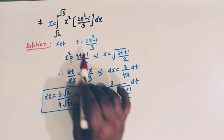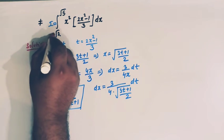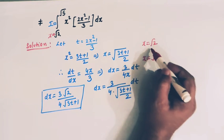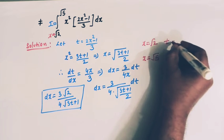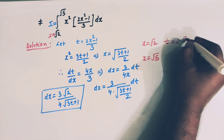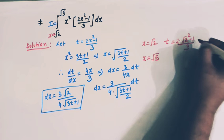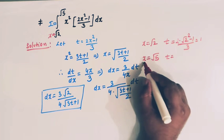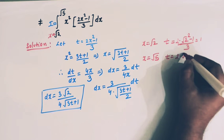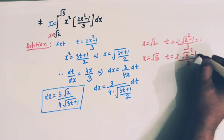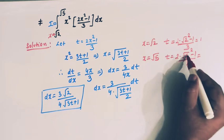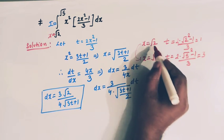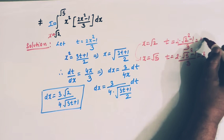Now let us change the limits. The original limits are from x equals square root of 2 to x equals square root of 5. When x equals square root of 2, t equals (2 times 2 minus 1) over 3, which is 3 over 3, that is 1. When x equals square root of 5, t equals (2 times 5 minus 1) over 3, which is 9 over 3, that is 3. So when x varies from square root of 2 to square root of 5, t varies from 1 to 3.